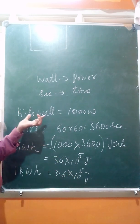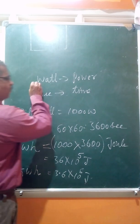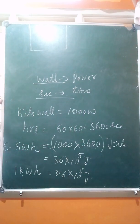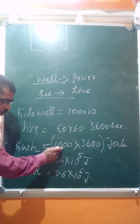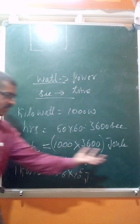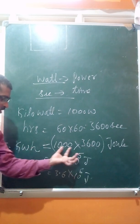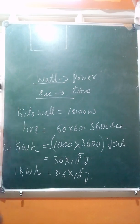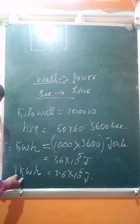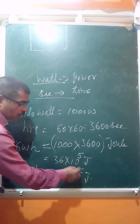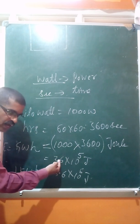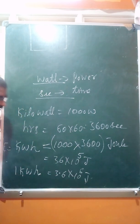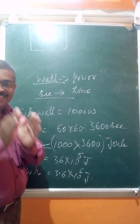This is a very important examination question: convert 1 Kilowatt-hour into Joules. One Kilowatt-hour equals 1000 Watts into 3600 seconds, which equals 3.6 times 10 to the power of 6 Joules. In multiple choice questions, you can also expect this. Note that 36 times 10 to the power of 5 and 3.6 times 10 to the power of 6 Joules are the same value. This covers electric power and the commercial unit.